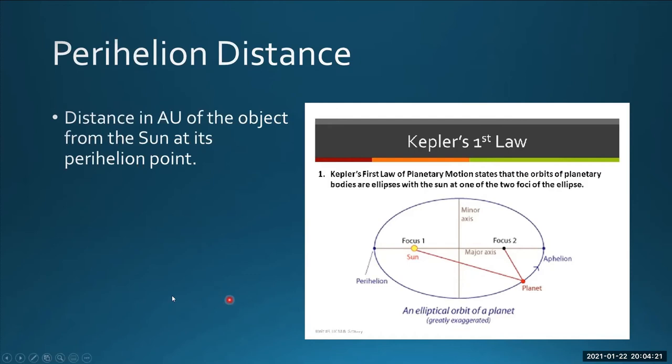The next item of interest is the perihelion distance. It's just the distance from the sun to the perihelion. Some objects come very close to the sun, so the perihelion distance would be small. This is usually expressed in astronomical units.